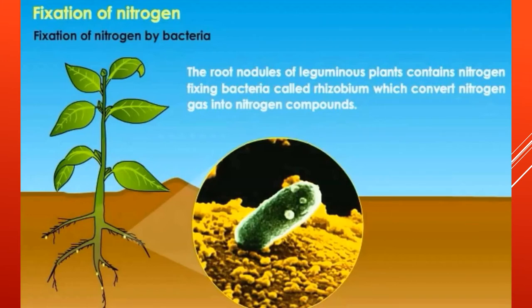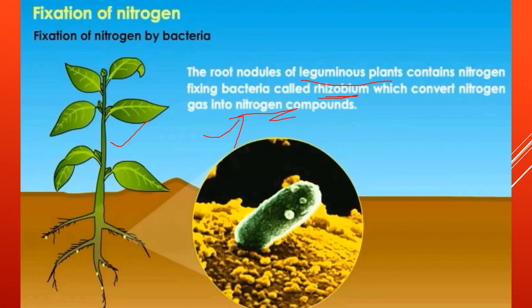The next field where microorganisms are helping is in the agricultural field. You have already learned that the roots of leguminous plants contain a bacterium called rhizobium that helps convert nitrogen into nitrogen compounds. Plants will then be able to absorb those nitrogen compounds directly from the soil.